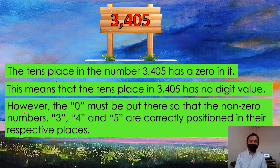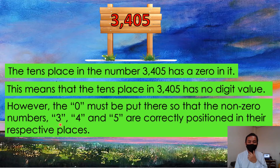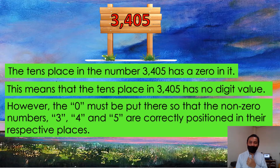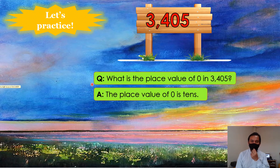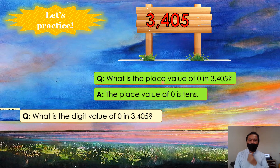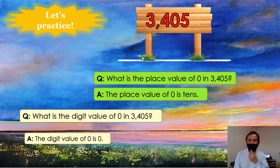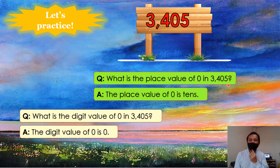However, the 0 must be put there so that the non-zero numbers in 3,405 are correctly positioned in their respective places. Let's practice. What is the place value of 0 in 3,405? The place value of 0 is tens.